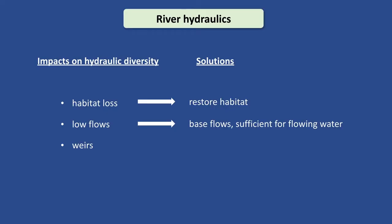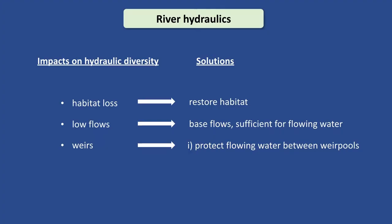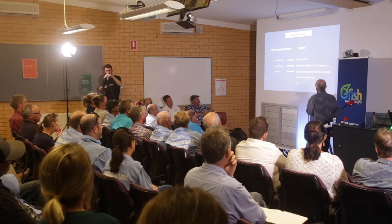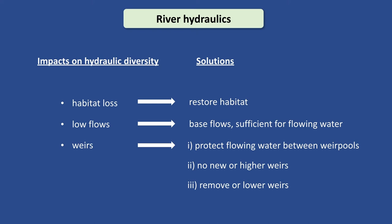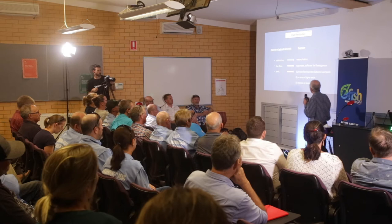And the third solution - weirs. There are a few aspects. Number one, we actually need to protect the flume water between the weir pools that we've already got. When people go fishing and look for that flume water, we need to protect that now. We don't want any new or higher weirs - we don't want to create more pool habitats and start inundating that flume water. That would be going backwards. But this also gives us a new opportunity to remove or lower weirs. Now many weirs are critical infrastructure - town water supply, they have to stay. But there are some weirs that have lost their function, and in that case we should think about removing them.